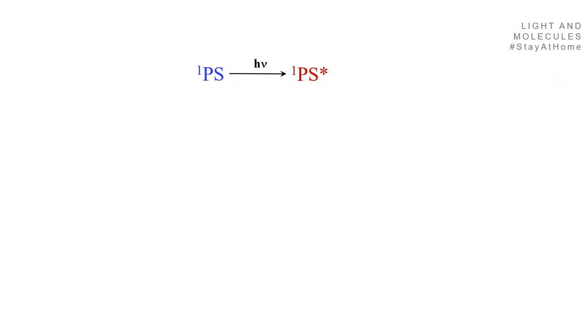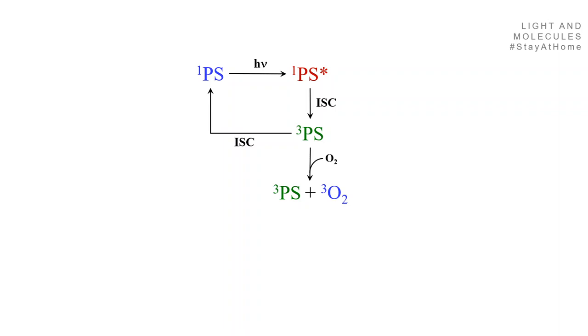Imagine the following sequence of reactions. You have a molecule, a photosensitizer, in a singlet state, and then it's photo-excited. Just afterwards, it goes to the triplet state through inter-system crossing, and eventually this triplet state can return to the ground state through another inter-system crossing. Or, this triplet state may interact with an O2 molecule in the environment and form a singlet oxygen.